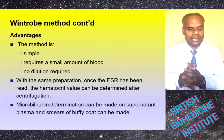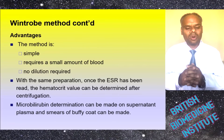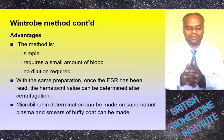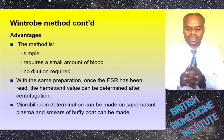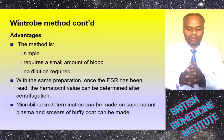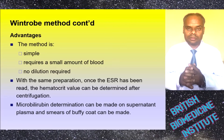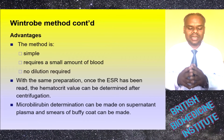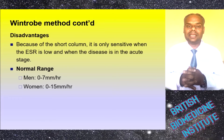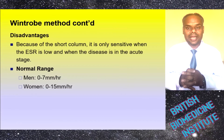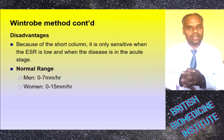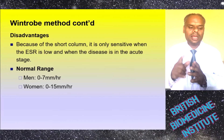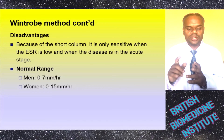The main advantages of the Wintrobe method are that it is simple, requires a small amount of blood, and no dilution is needed. With the same preparation, once the ESR has been read, the hematocrit value can be determined after centrifugation, microbilin determination can be made on the supernatant plasma, and a smear of the buffy coat can be made. The main disadvantage is that because of the short column, it is only sensitive when the ESR is low; in acute stage disease this is a significant limitation. Normal ranges are 0–7 mm/hr for men and 0–15 mm/hr for women.